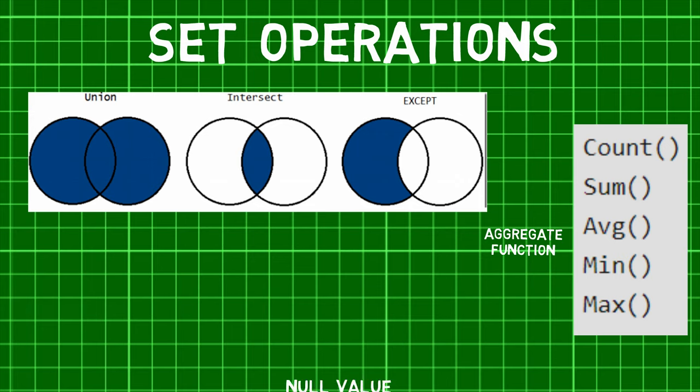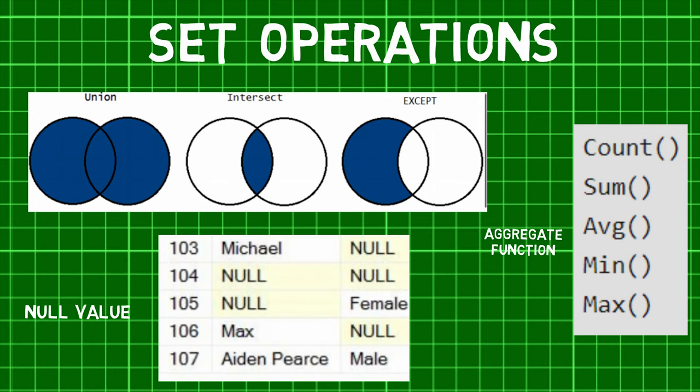In SQL, NULL is the term used to represent a missing value. A null value in a table is a value in a field that appears to be blank. It is very important to understand that a null value is different from a zero value or a field that contains spaces.